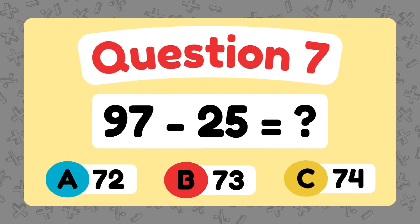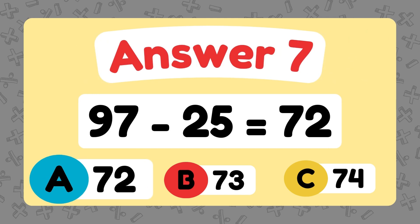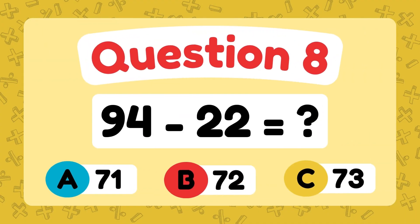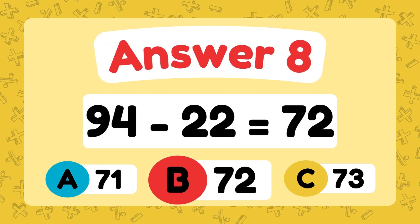What is 97 minus 25? The answer is 72. What is 94 minus 22? The answer is 72.